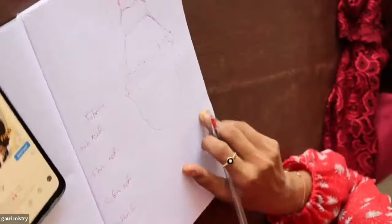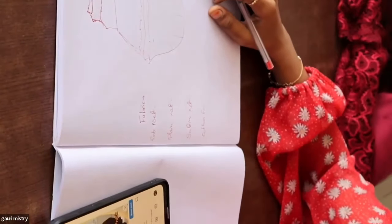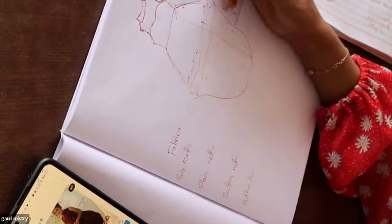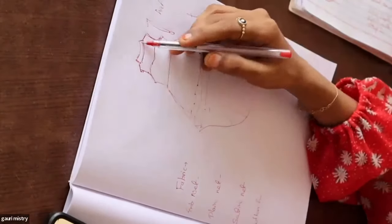Now we will learn how to do fabric calculation. Take it up. The back length is 36, so 36 minus yoke.